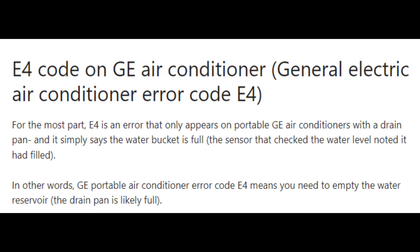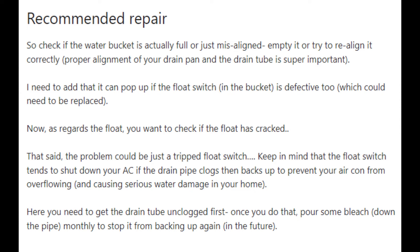The next error code is E4 on your GE air conditioner — quite an easy one. It simply means the water pan is full. This occurs on portable GE air conditioners whenever the water pan is full. Once you see error code E4, check whether the water bucket is full. The sensor that checks the water level will tell the AC it's full when it actually is, and the unit cannot operate when it is overflowing. Simply empty the water reservoir and error code E4 should go away.